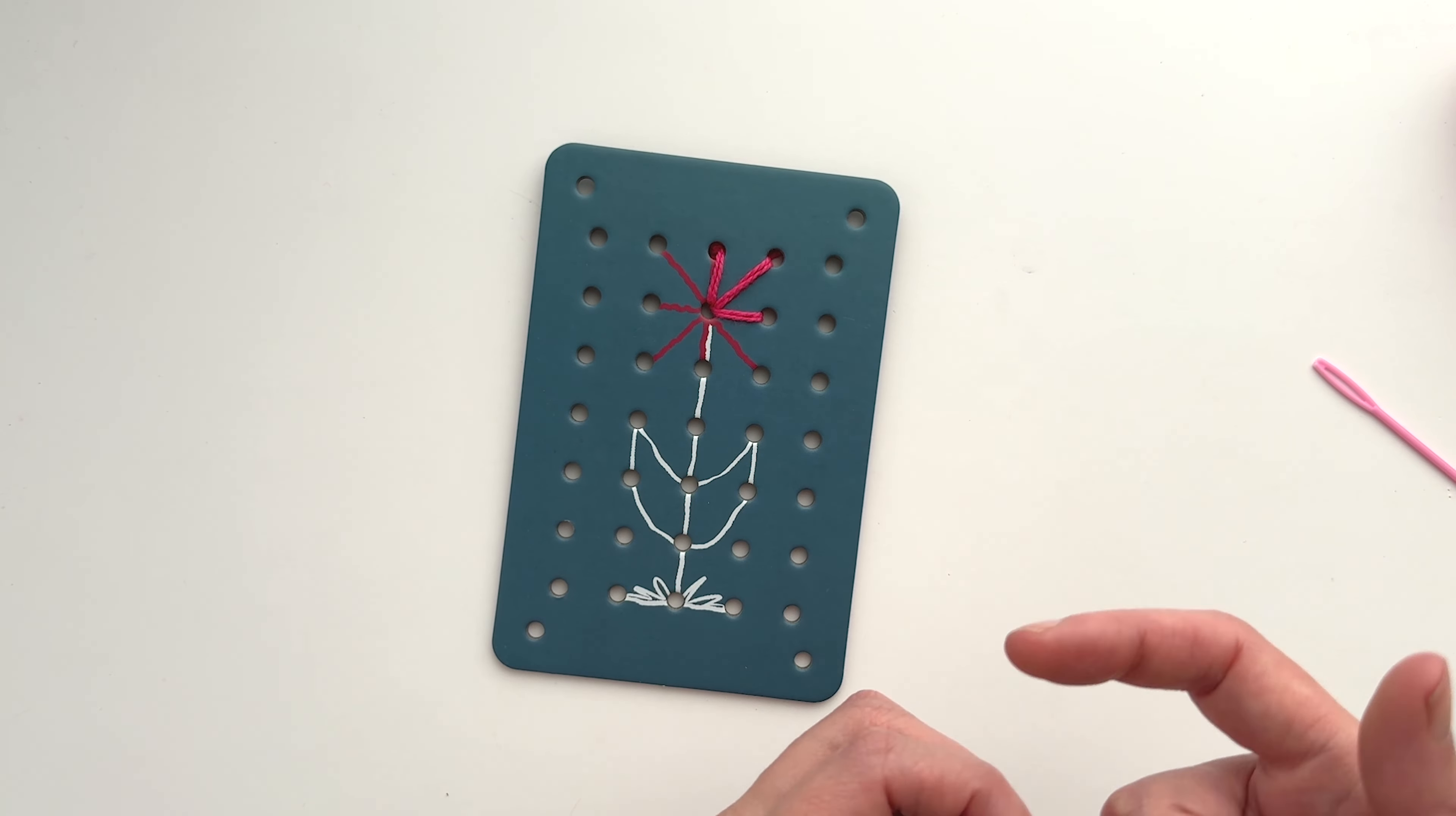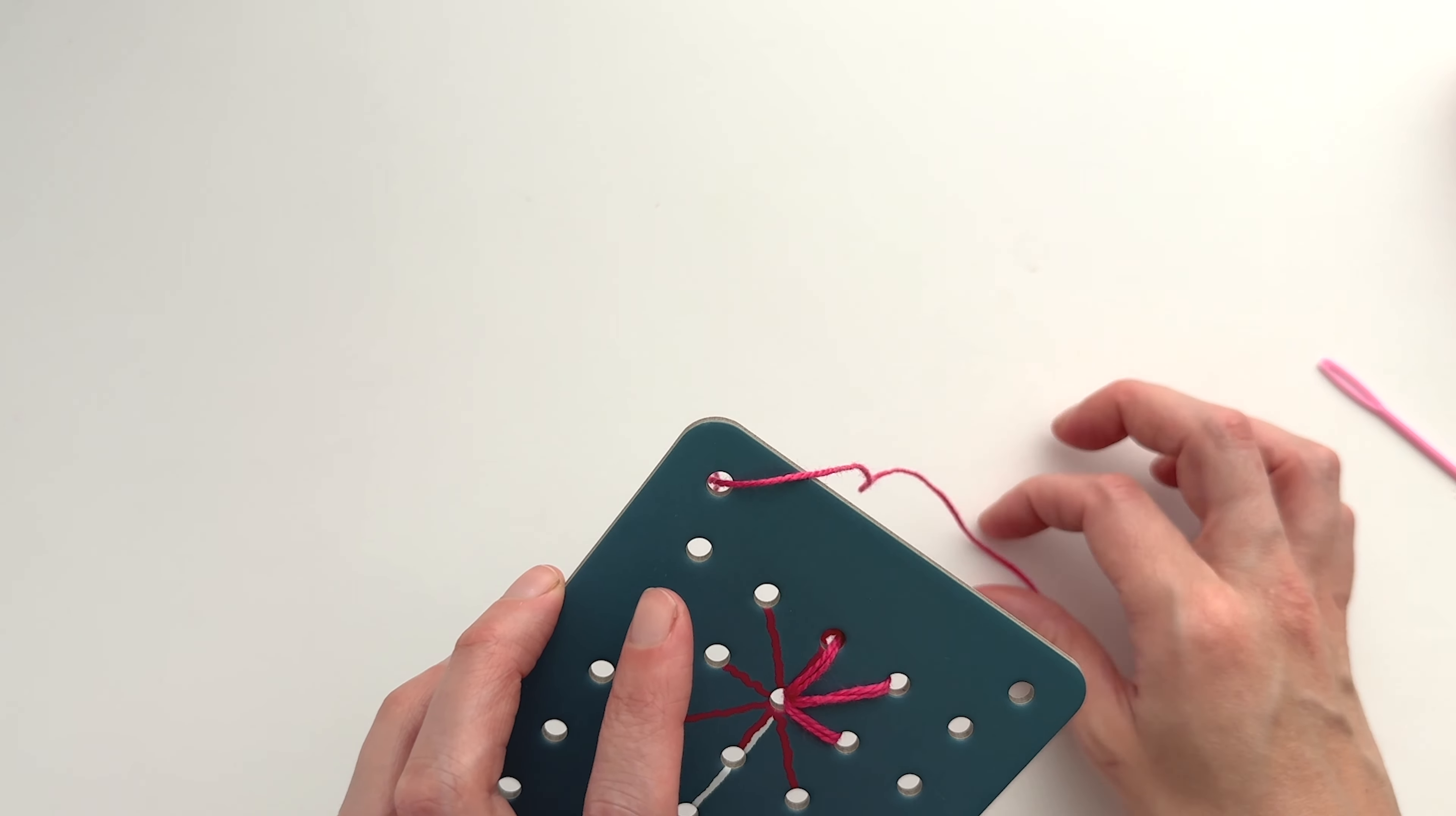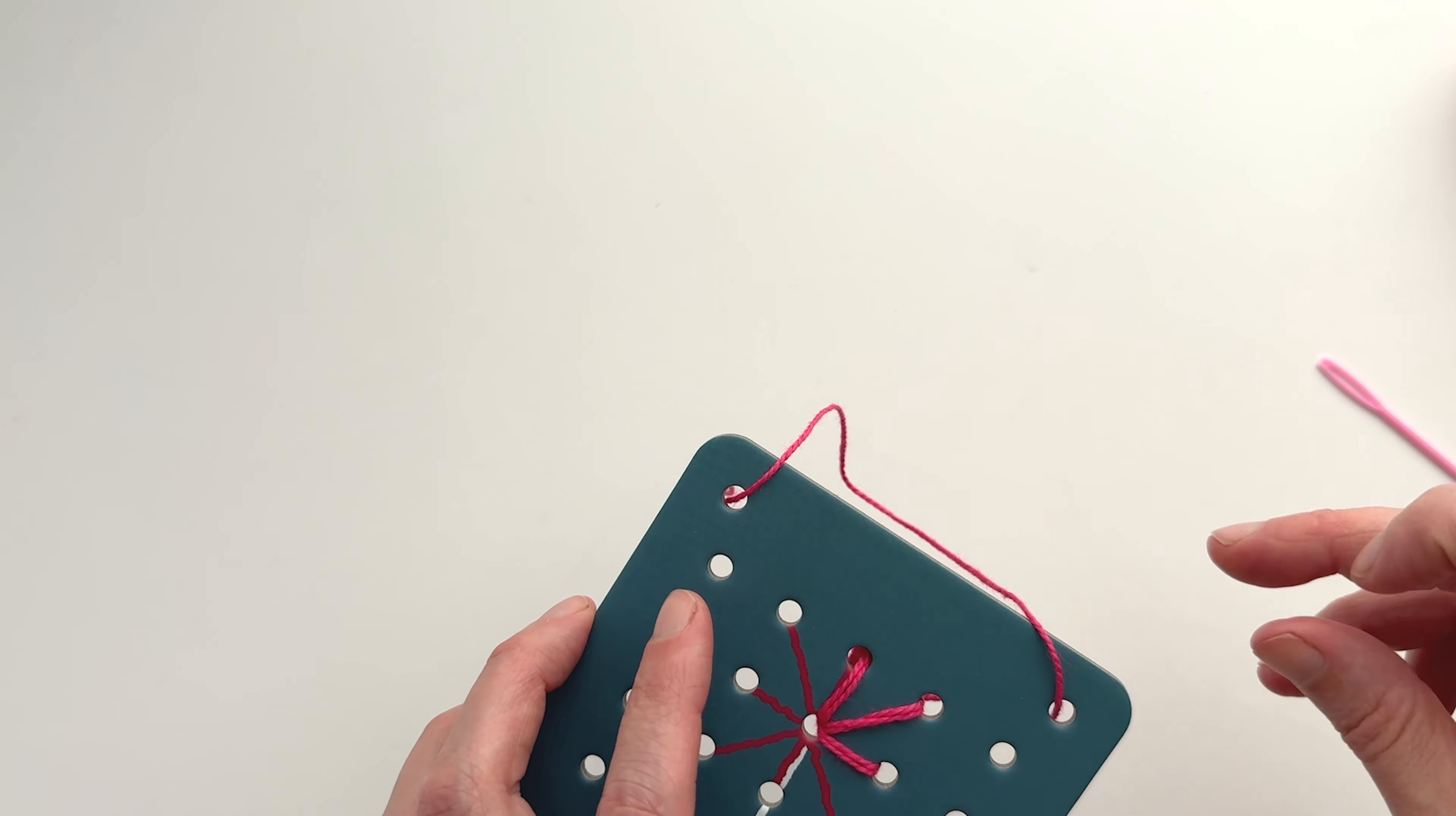You could hang them next to each other as a bunting, or you can just put some yarn into the corners of one card.